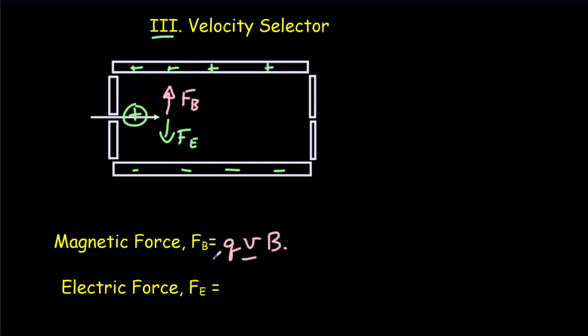So the faster that ion is moving, the bigger the magnetic force. So if our particle is coming in too fast, the magnetic force is going to be too big and the particle is going to deflect upwards.